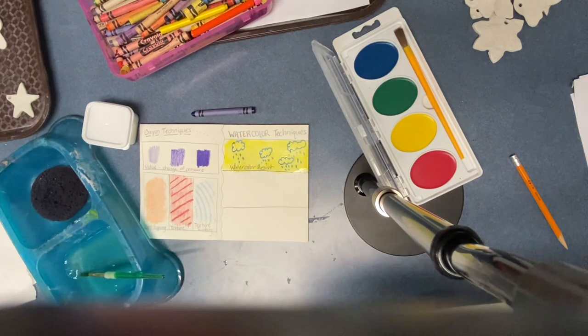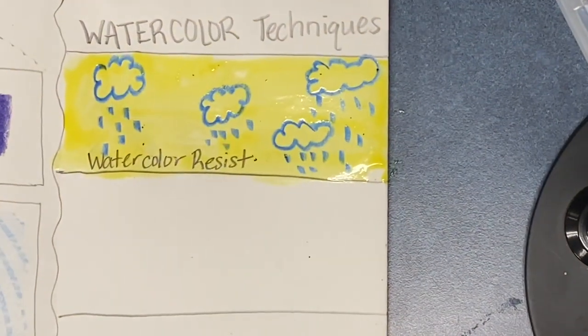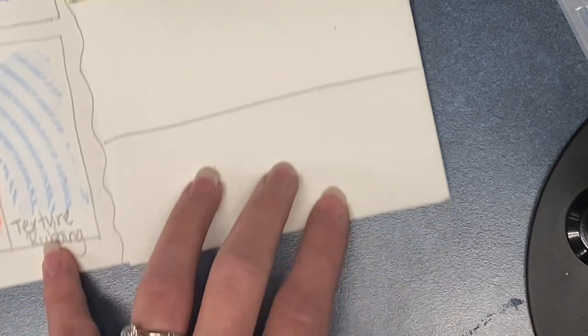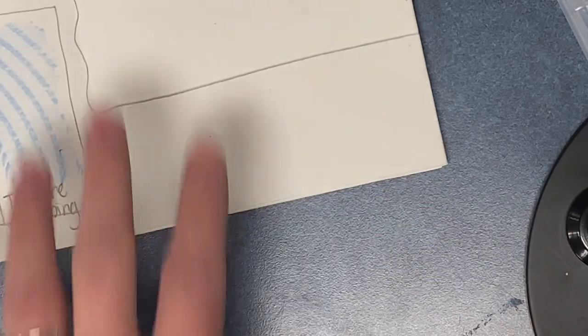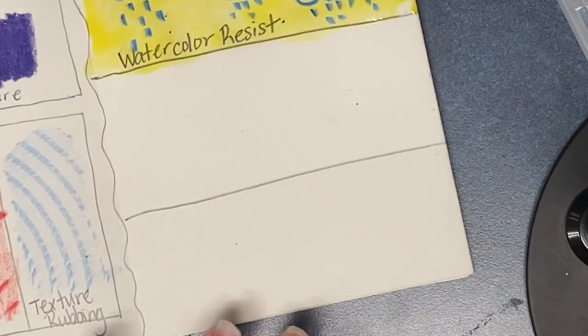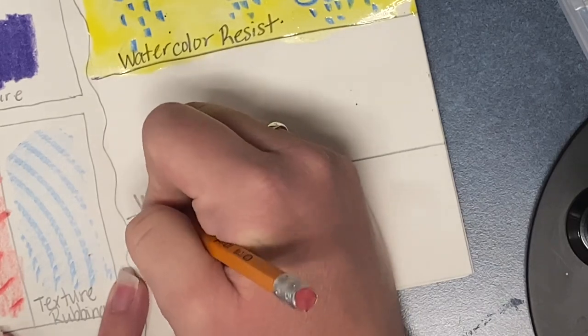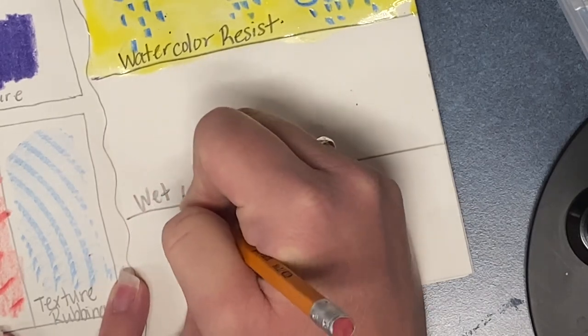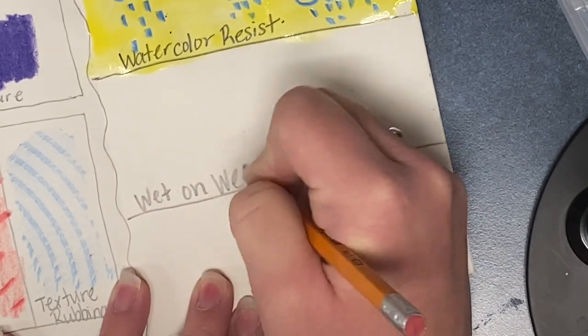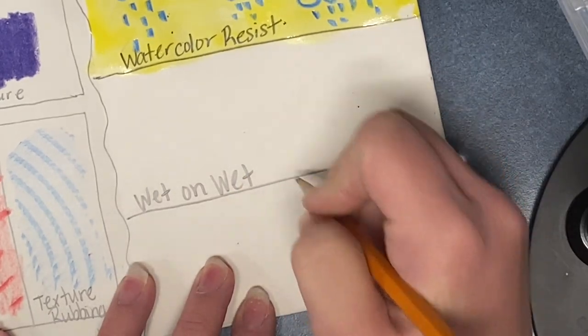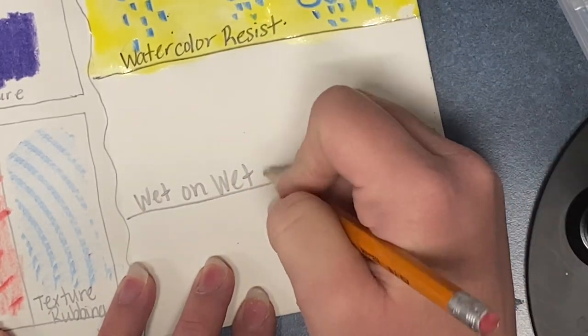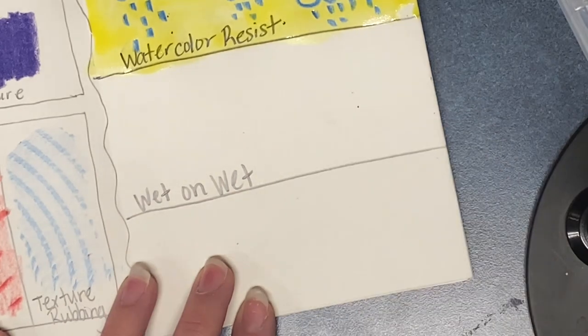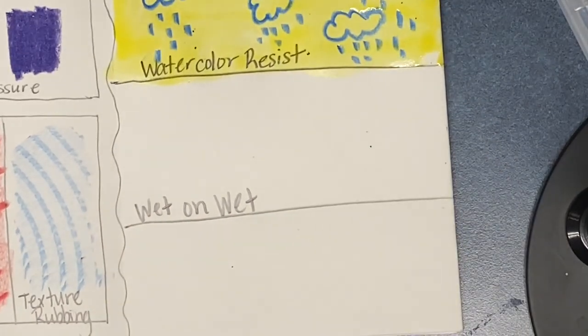The next technique that we will do is called wet-on-wet. That's pretty much exactly how it sounds. We're going to wet the paper down, then use wet watercolors on top of that wet paper. Wet-on-wet.